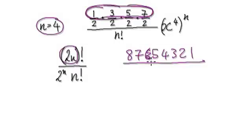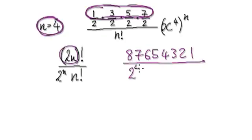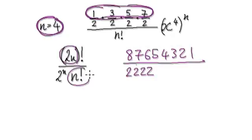So you need to get rid of 8, 6, 4, 2, and so on. Consider this: if you want to get rid of all the even ones, consider 2 to the power of 4 — since n equals 4, that would be 2 times 2 times 2 times 2 — and then multiply it with 4 factorial.